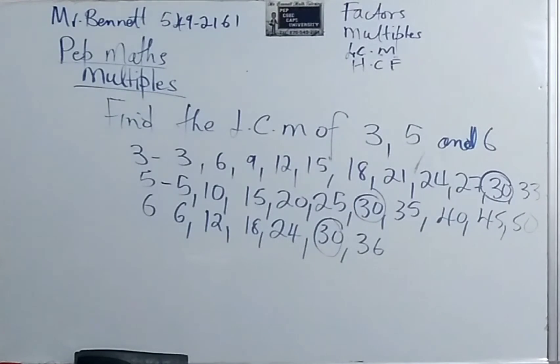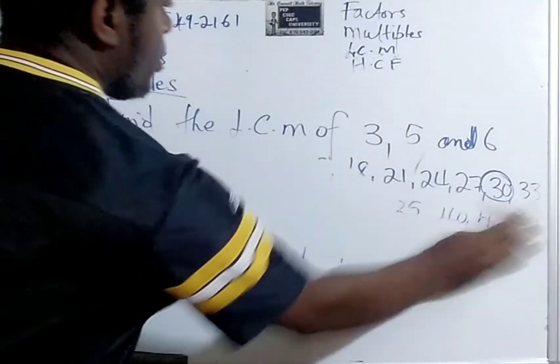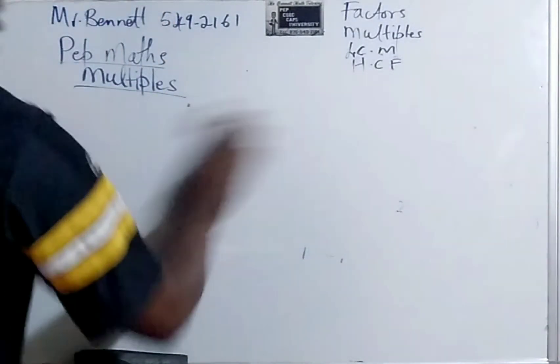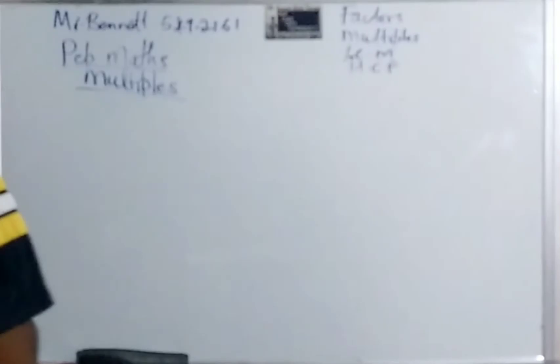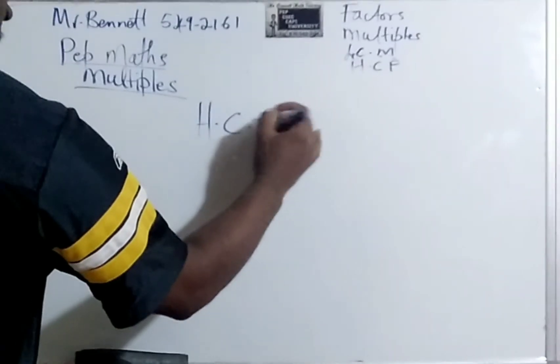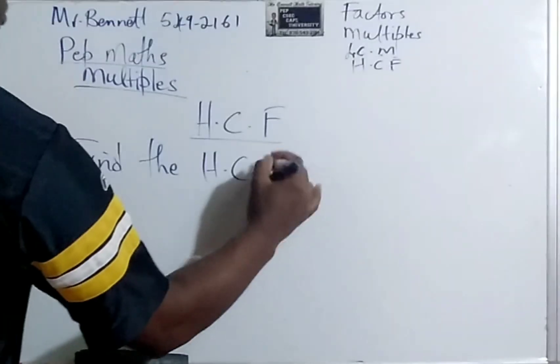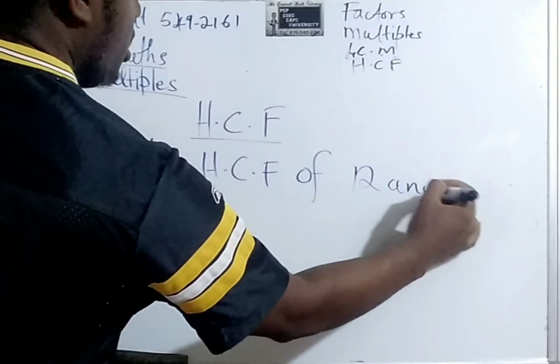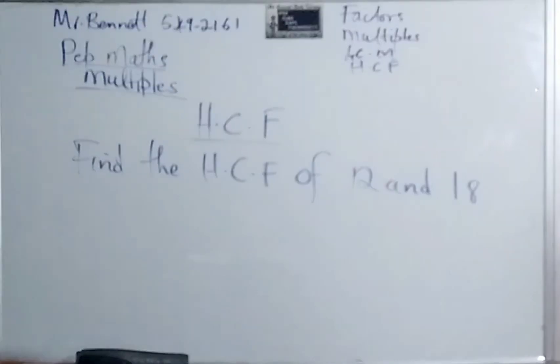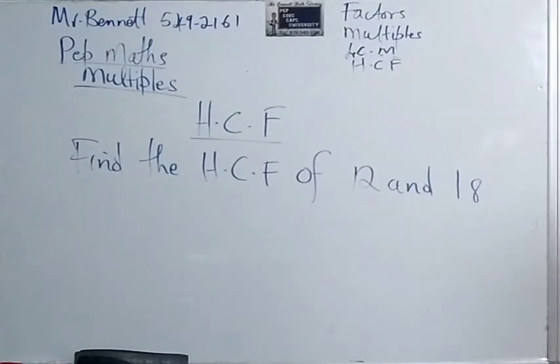Very good, guys. All right. Let us look at highest common factor. Because students tend to mix up lowest common multiple and the highest common factor. What is the HCF, or the highest common factor? The highest common factor is the highest factor that is common to all. It is as simple as that. So let us say, find the highest common factor of 12 and 18. Now first, because we learned earlier how to do factors, we can actually do it. So we list all the factors of 12 and all the factors of 18.